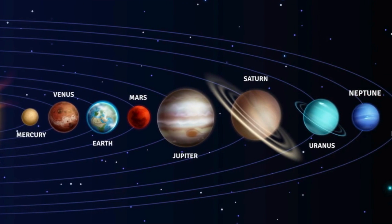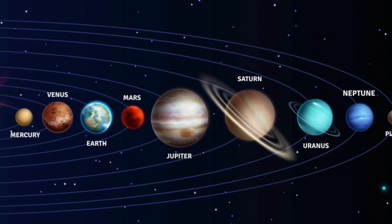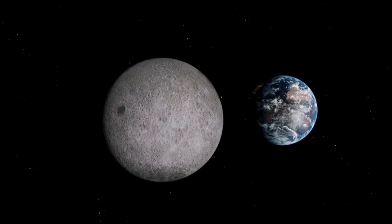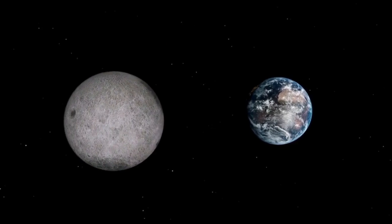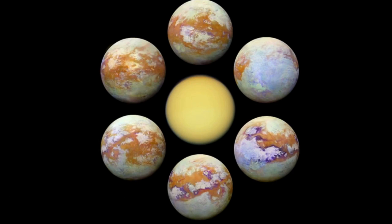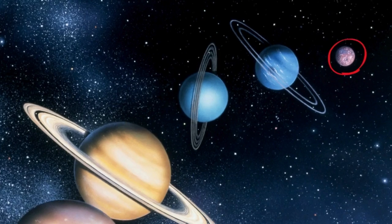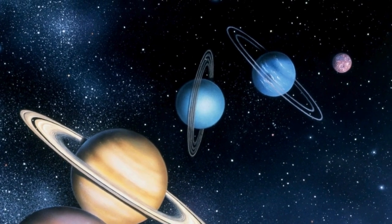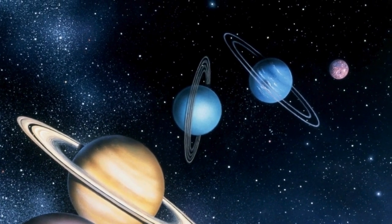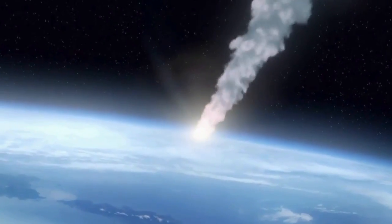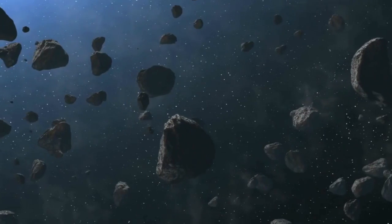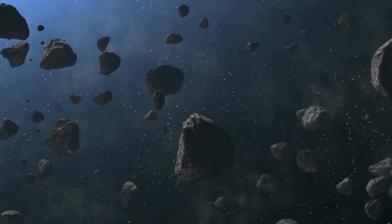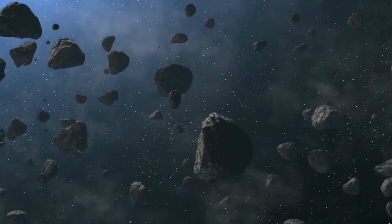Indirect objects include the moons that revolve around the planets. There are over 200 moons in our solar system. In addition, you have dwarf planets like Pluto and small solar system bodies, which are comets, asteroids, and trans-Neptunian objects.